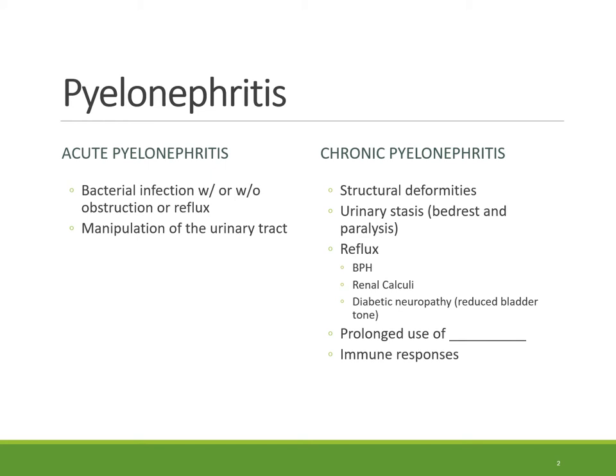Acute pyelonephritis is often caused from bacteria that reflux up into the bladder. It can also be caused by insertion of a catheter or a patient having a cystoscopy performed. So any kind of manipulation of the urinary tract puts a patient at risk for acute pyelonephritis.